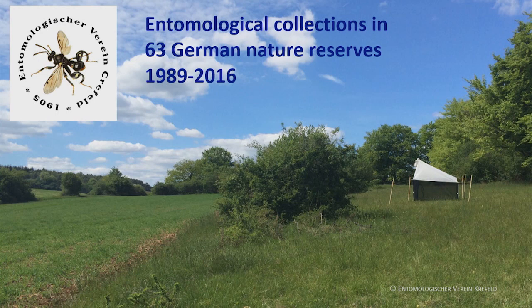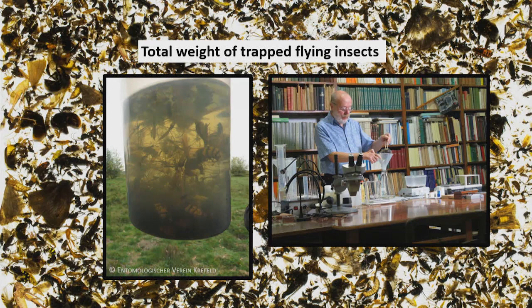We already heard a lot about malaise traps, so I don't have to introduce them. We have a big dataset spanning nearly 30 years across 63 different protected areas in Germany. Here we see, just very briefly, how that biomass was determined. Particularly Heinz Swan has been developing this method that Martin just described, doing it over all this time in a very precise and well-documented manner — so well that we could use it very well for our further analysis.